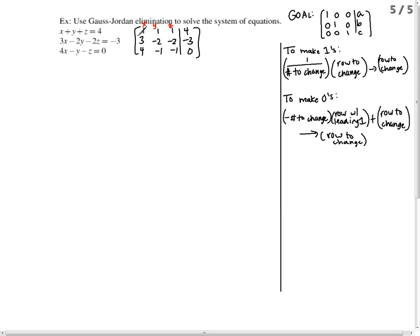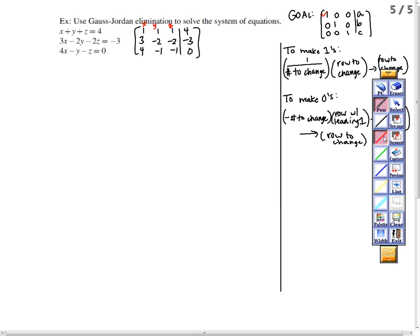If you notice, they were very nice and they gave us the 1 in the 1, 1 entry. Now we're going to make zeros. One strategy is to make a unit column at a time, make the leading 1, then create the zeros. If you do that, then these are the row operations.